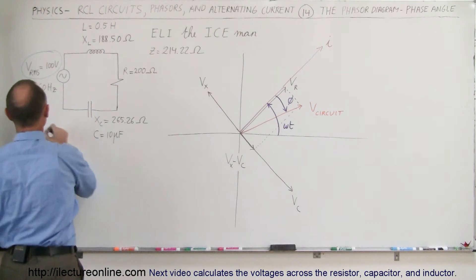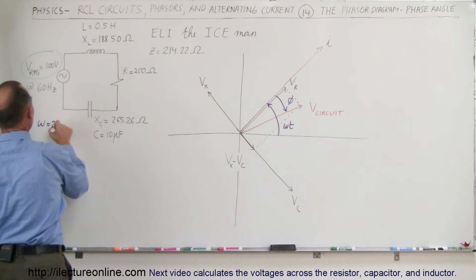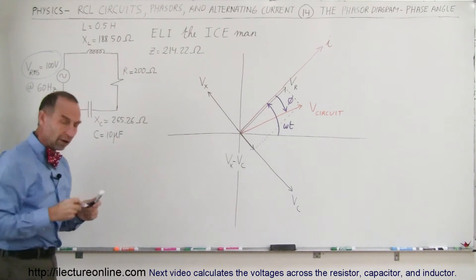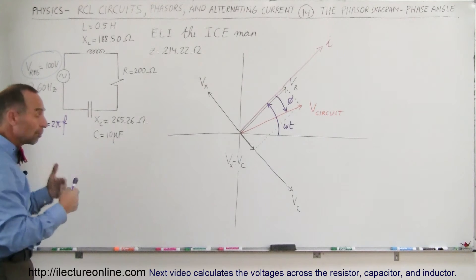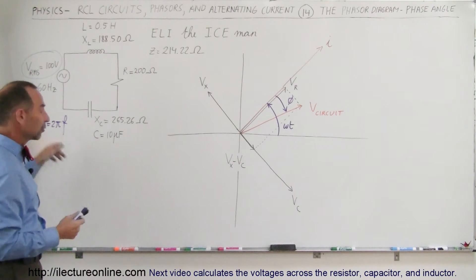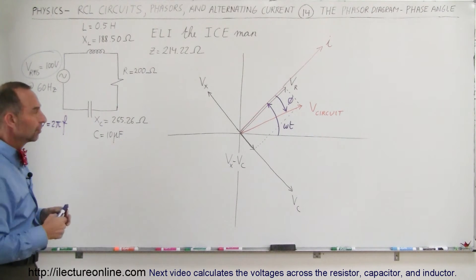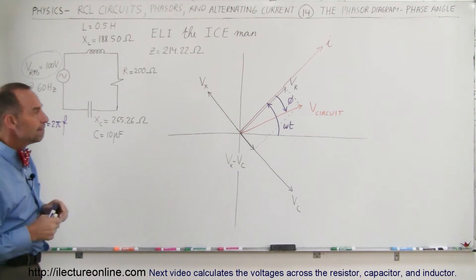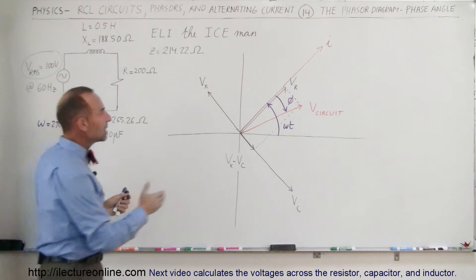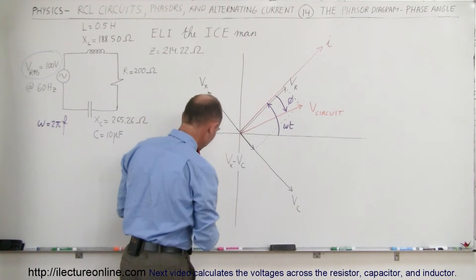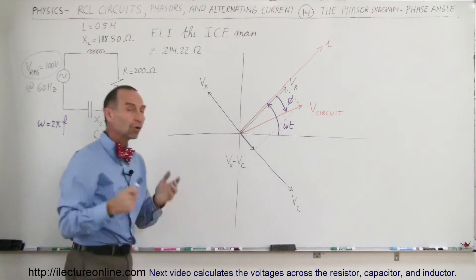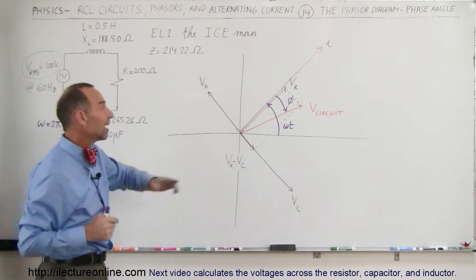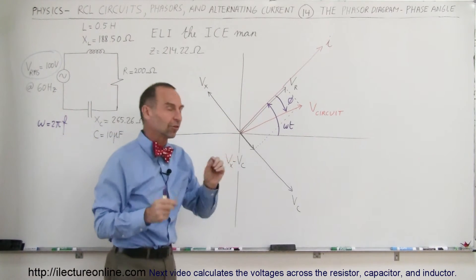Remember that omega is equal to 2π times the frequency of the oscillator, and the frequency is the number of cycles per second, and omega is the number of radians per second. So omega-T tells you the position as a function of time of the voltage across the resistor in the phase diagram. Also realize that the current in the circuit is always exactly in phase with the voltage across the resistor.